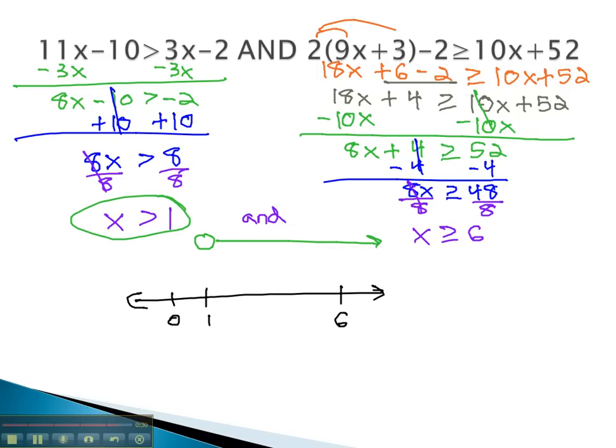And the second inequality starting at 6 with a closed circle, going bigger. Notice in this graph the overlap starts at the bottom graph at 6, and then they continue to overlap going off to the right.